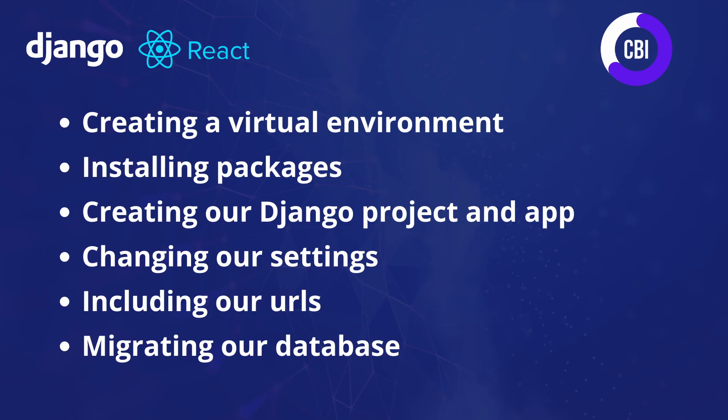To successfully set up our Python Django backend we're going to go through six steps. We'll start by creating a virtual environment which tracks all of the packages that we install during our project. Next we'll install packages such as Django, npm, and Django REST framework. Then we'll create our Django project and app from the command line, change our settings.py file, include our URLs, and migrate our database. At the end we'll check whether everything works as expected. For this tutorial series I'll be using Visual Studio Code, and it will be good if you already have some knowledge of Python Django and understand what React.js is.